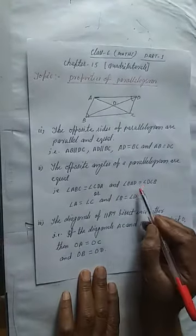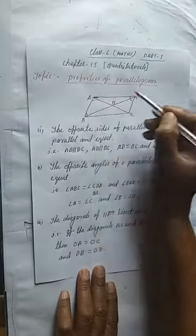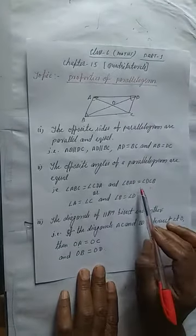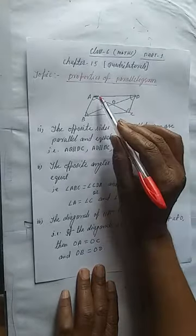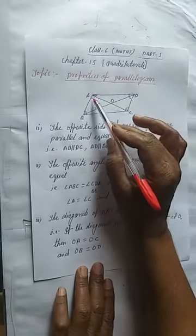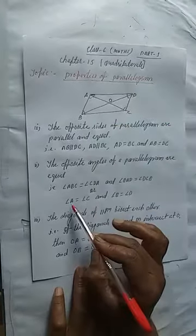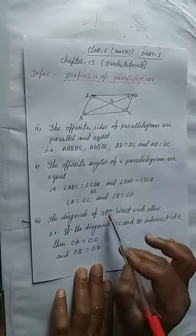Similarly angle BAD, means this angle, okay, BAD is equal to angle DCB, means DCB means this angle. This angle is equal to this angle and this angle is equal to this angle. And we can write in the shortcut form also, like this: angle A is equal to angle C, means this angle equal to this angle, and angle B is equal to angle D.